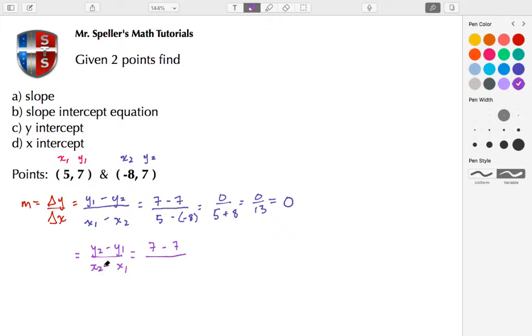X₂ is negative 8, and subtracting off X₁, which is 5. So here again, I have 7 minus 7 to give me 0, and then negative 8 minus 5 to give me negative 13. Again, since my numerator is 0, that makes the entire fraction 0, so I found my slope to be 0.